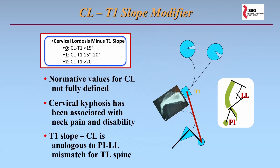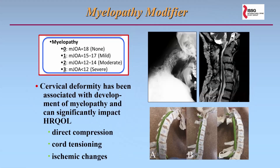The next modifier was the cervical lordosis minus T1 slope. Similar to what's used for the pelvic incidence–lumbar lordosis relationship, we used the T1 slope as the base to determine how much cervical lordosis was necessary for that individual. The thresholds were determined based on a modified Delphi approach, as there were not good normative values in the literature at the time. The next modifier was a myelopathy modifier. A number of these patients can have significant spinal cord compromise, either direct compression or stretching, and so we used the modified Japanese Orthopaedic Association score, or MJOA, as a modifier for the classification.